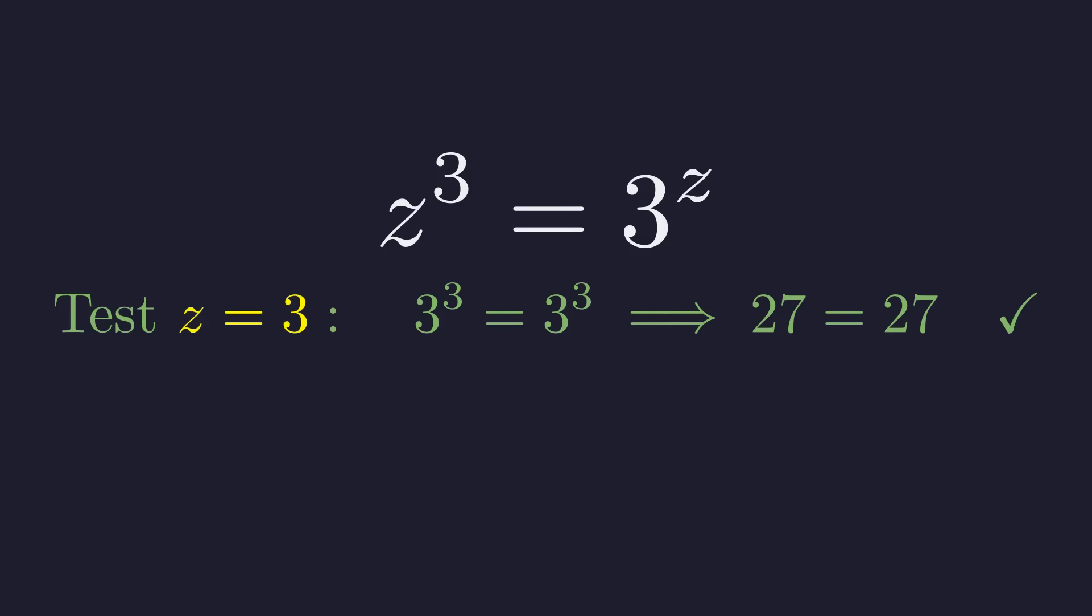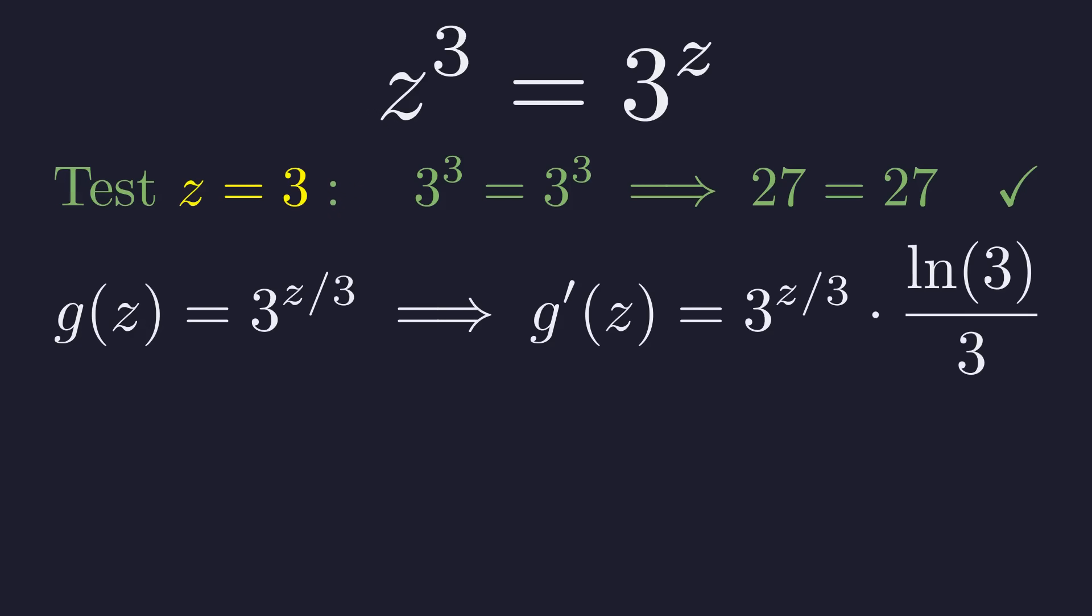But we can no longer trust this apparent solution. We must test its stability. Our function is g of z equals 3 to the z over 3. Its derivative is 3 to the z over 3 times the natural log of 3 divided by 3.